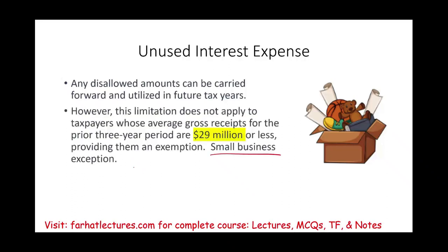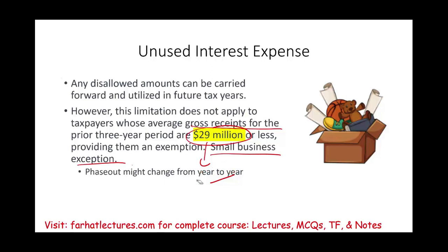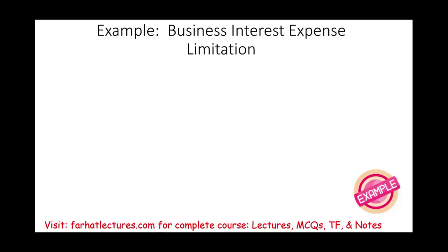However, this limitation does not apply to small businesses. Under the small business exception, if the taxpayer's average gross receipts for the prior three years is below a threshold — for 2023 that number is $29 million, and it will be higher in future years — you qualify as a small business. If you qualify for the small business exception, you don't have to worry about this limitation and can deduct all of your interest expense.